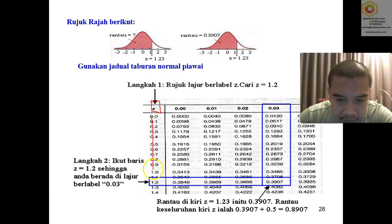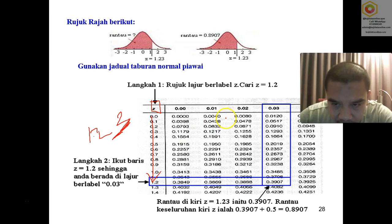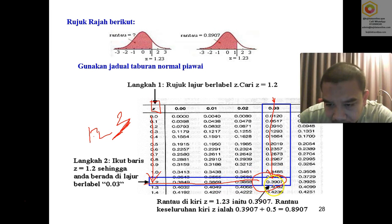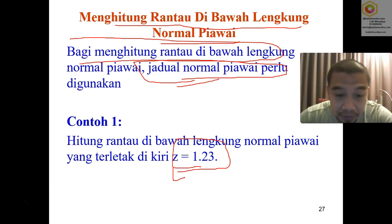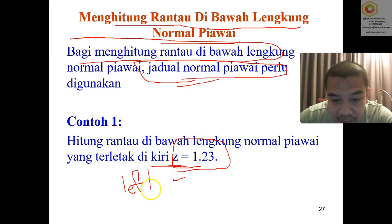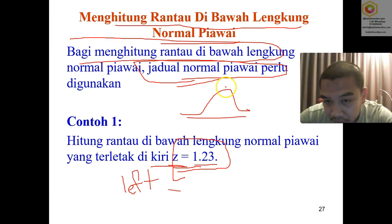For z = 1.23, we find 1.2 on the rows of the table. Then we look at the column for 0.03. The intersection of the row 1.2 and column 0.03 gives us 0.3093. Remember, this question asks for the left of z, meaning the left side of the z value.